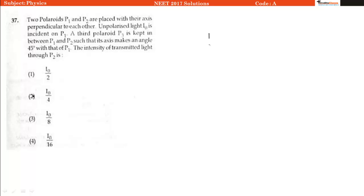So we are given that there is P1, then we have P3, then we have P2. The angle between these two is 45 degrees, and again the angle between these two will be 45 degrees or 135 degrees. But in both cases it will not make any difference to our calculations. So let us take 45 degrees here.